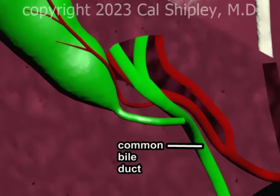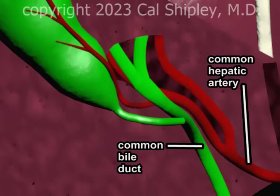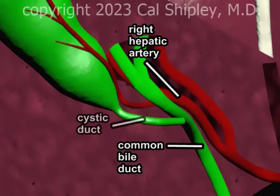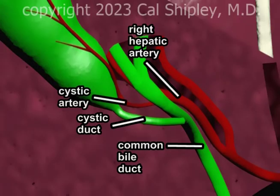The common bile duct carries bile from the liver to the small intestine. The common hepatic artery is the primary source of blood flow to both the liver and the gallbladder. The common hepatic artery divides into the right and left hepatic arteries. The gallbladder is attached to the common bile duct by the cystic duct, and also attached to the right hepatic artery by the cystic artery.